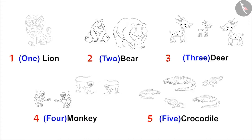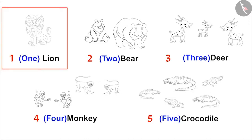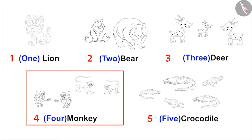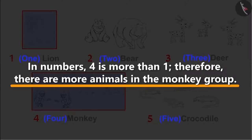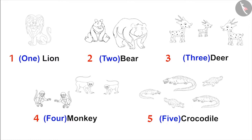Now can you tell me if there are more animals in the lion group or in the monkey group? There is one animal in the lion group and there are four animals in the monkey group. Amongst the numbers, four is more than one. Therefore, there are more animals in the monkey group. Very good, Pinky!